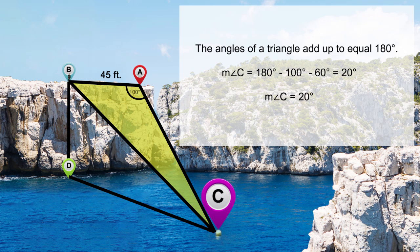Given that angle A is 100 degrees and angle ABC is 60 degrees, find angle C and the length of BC.